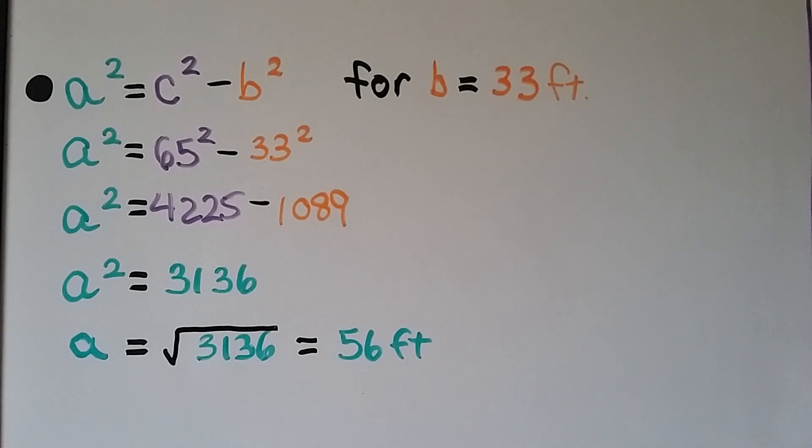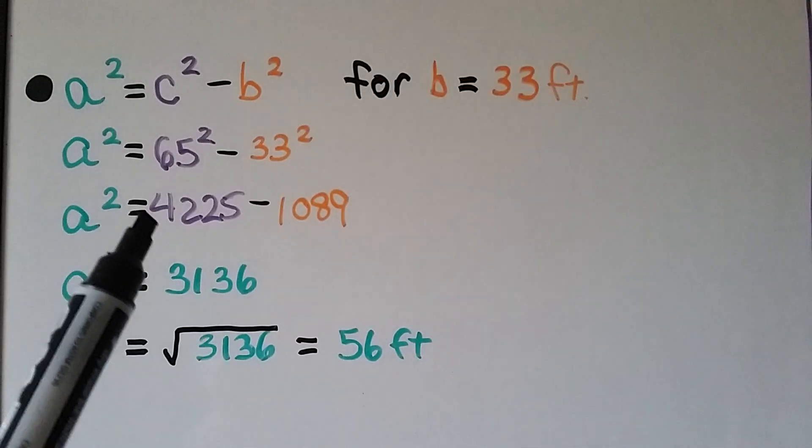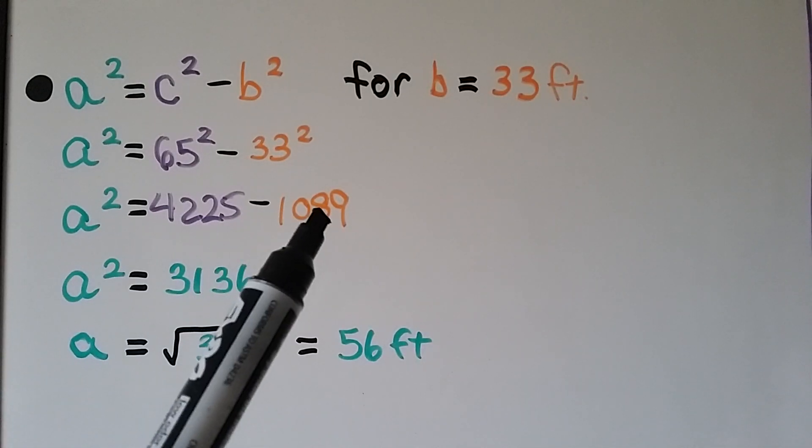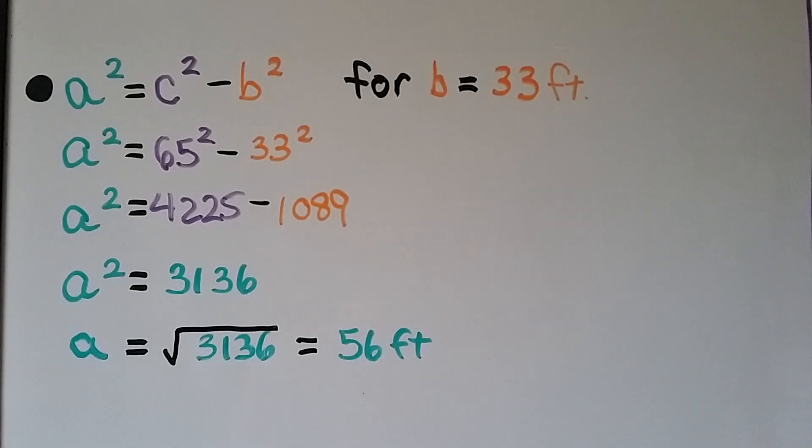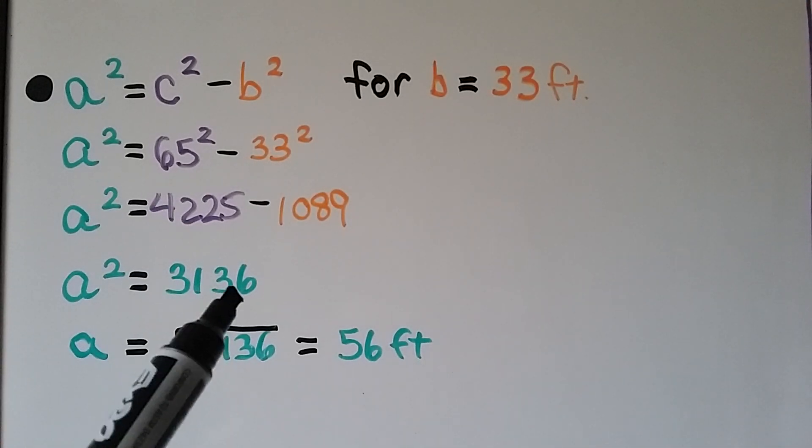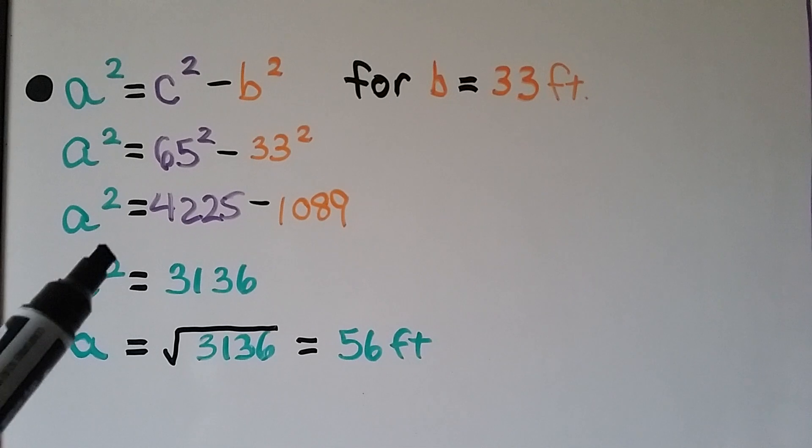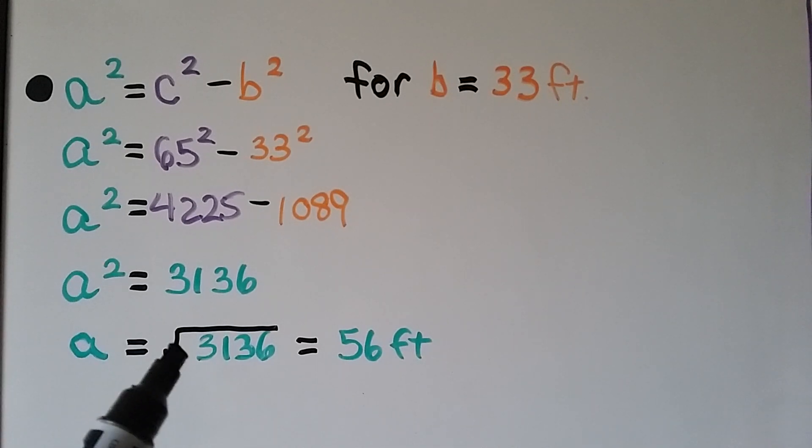If leg b is 33 feet, then we have 65 squared minus 33 squared. That means we're going to subtract 1,089 from 65 squared. That's going to give us 3,136. We remove the exponent by putting a radical sign around this side. We find the square root of 3,136 and it comes out as 56 feet.